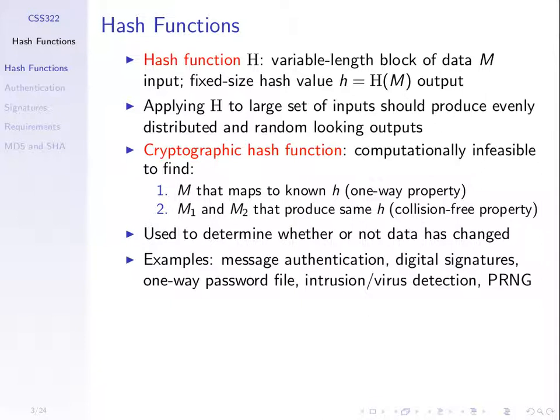That function H, uppercase H, when we apply it to many different inputs, it should produce outputs which are evenly distributed and random looking. So it should produce random outputs — that is, the hash values should appear like random numbers or random strings.